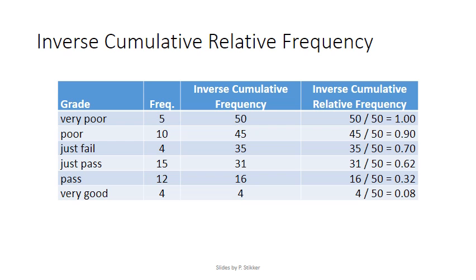Here's an example of that method. The total of all frequencies was 50, and we saw that there were 31 students who scored a just-pass or better. Therefore, 31 divided by 50 equals 0.62. This 0.62, or 62 percent of the students, passed the exam.